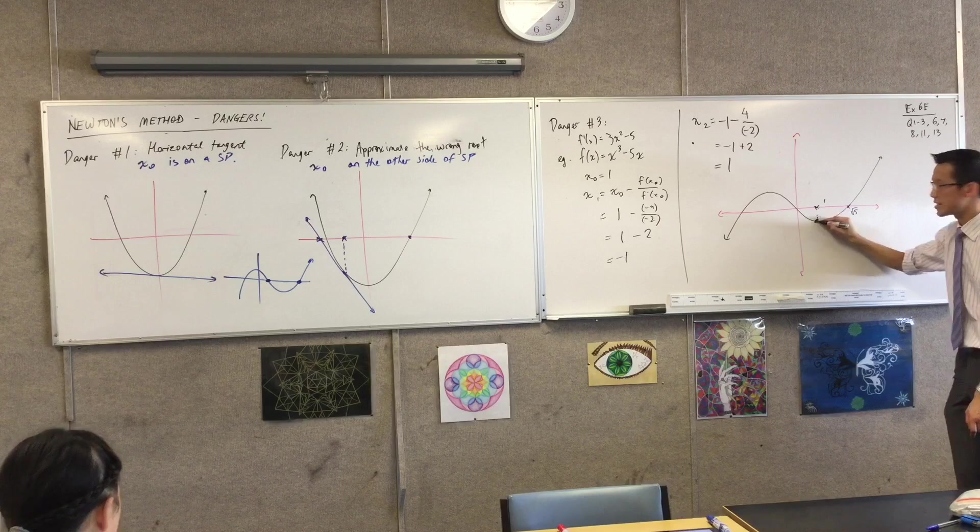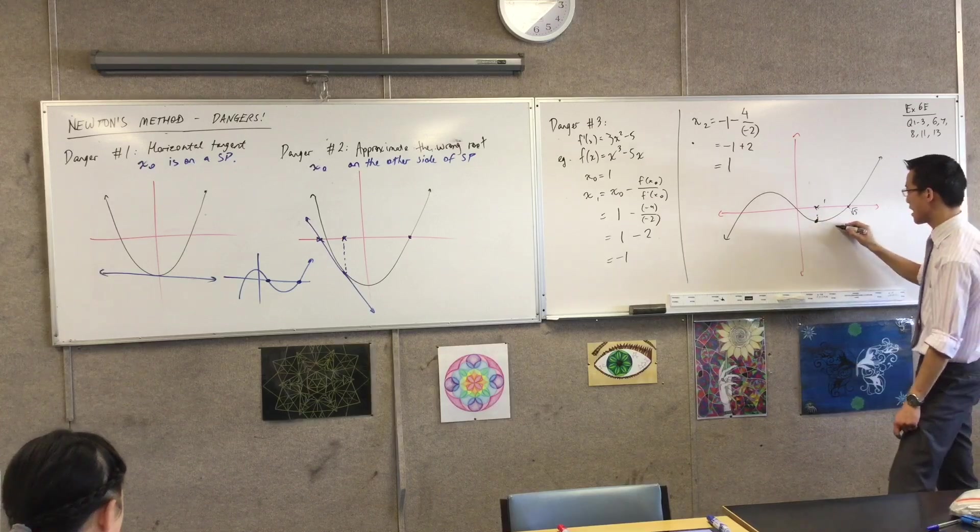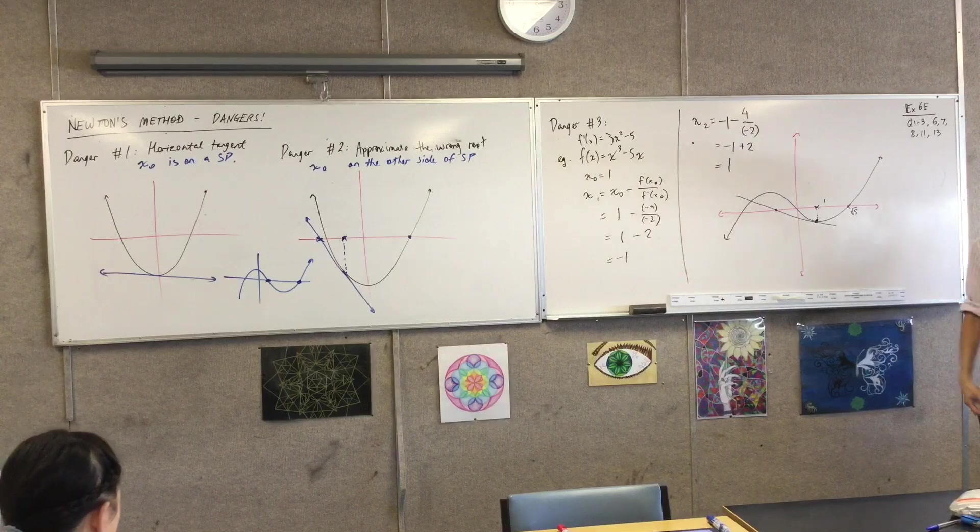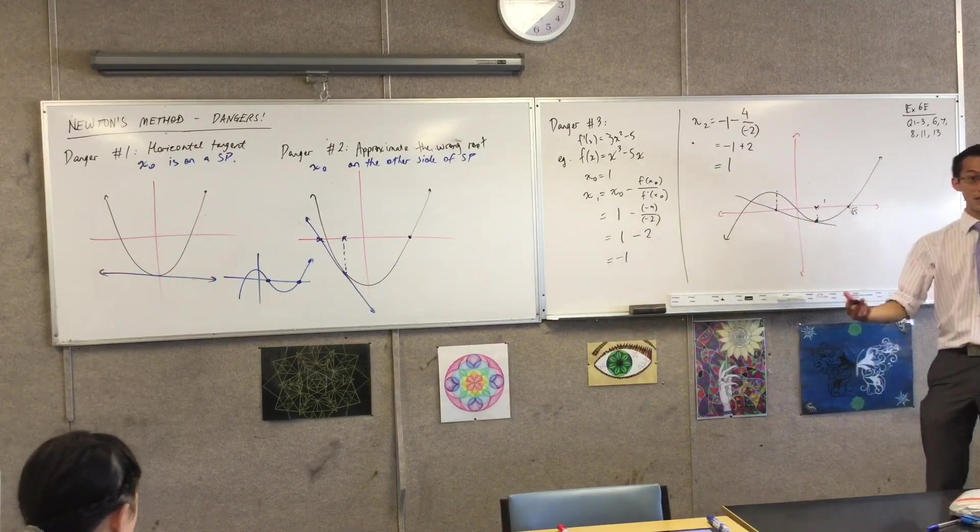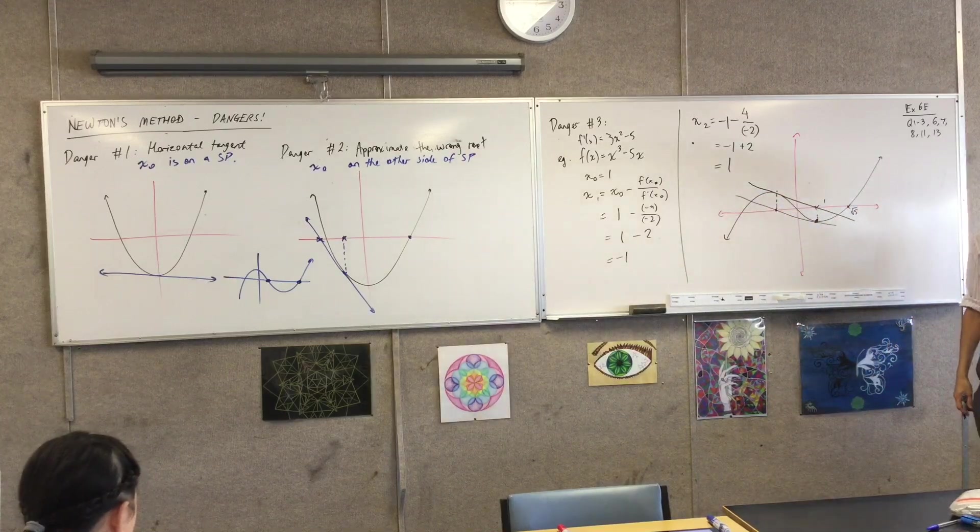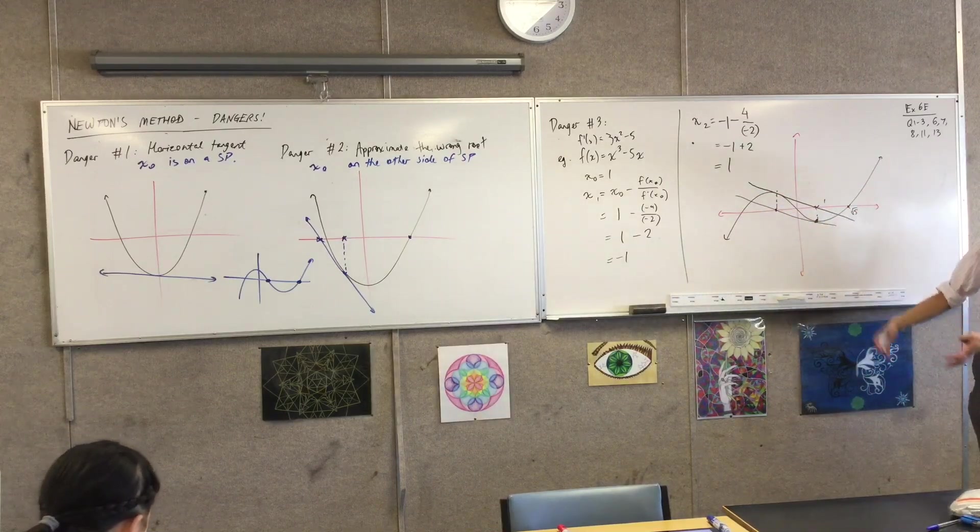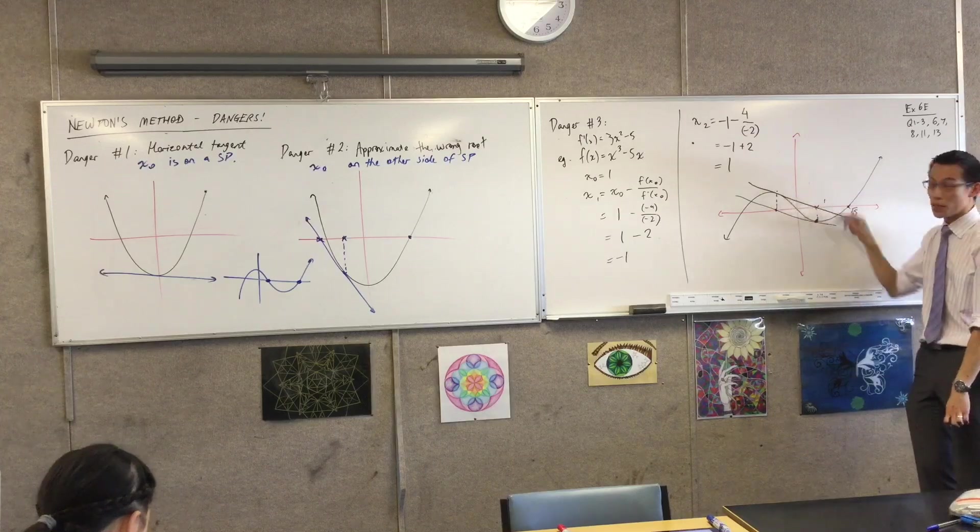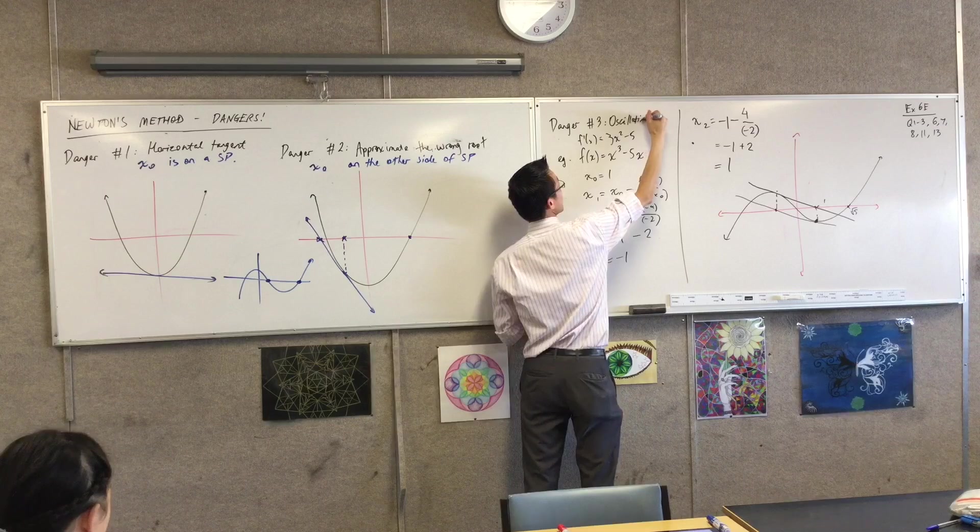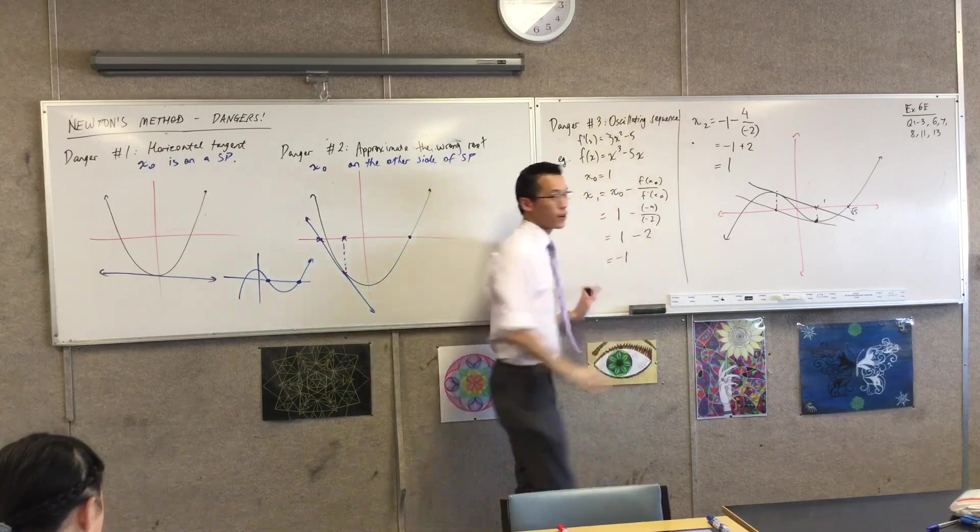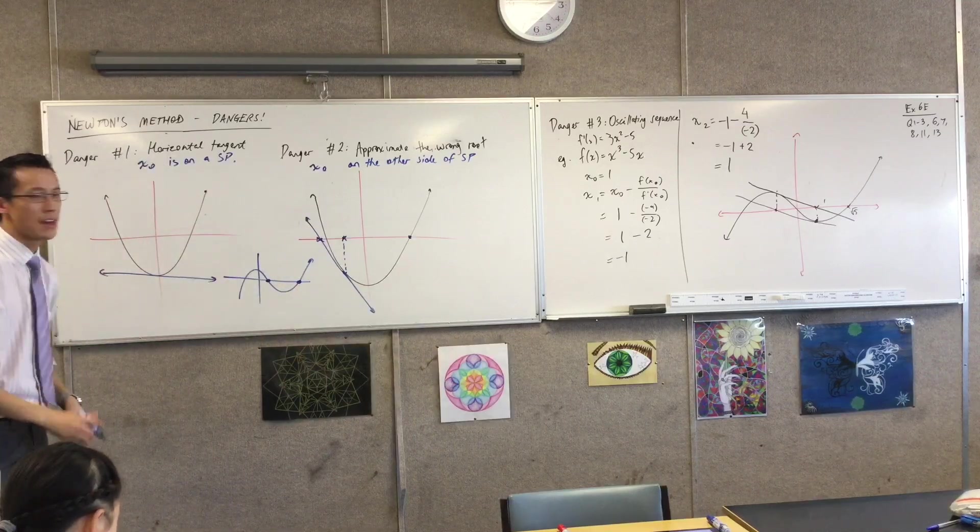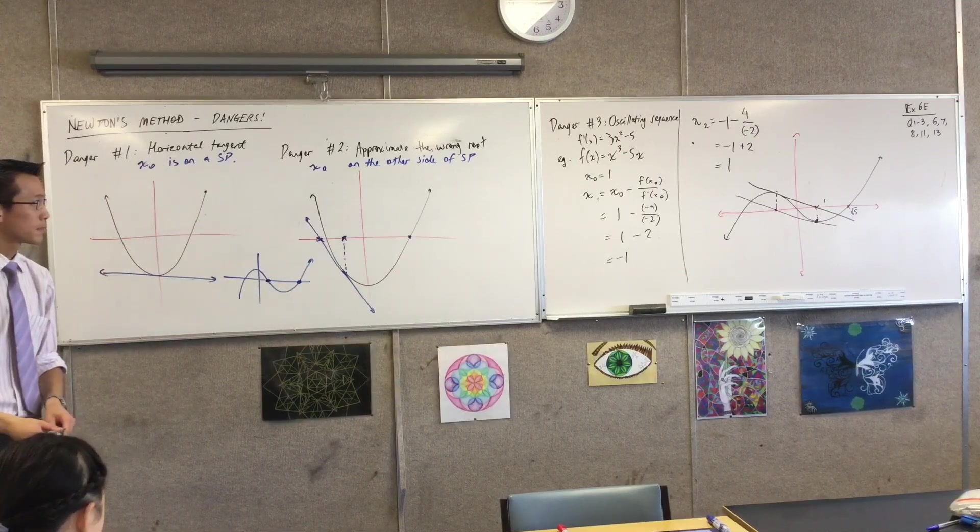Now I went down, I found the tangent at that point and it ended up sending me over to there. There was my x1. And so I went again. I said, okay, well, let's have a look. Let's find out what the tangent will do. And it sent me straight back to my original value. And it's like Groundhog Day for calculus. What we call this... This is the name of danger number 3. It's called an oscillating sequence. Because it goes back and forth and back and forth and it never makes progress.